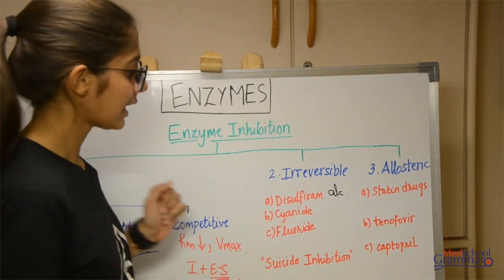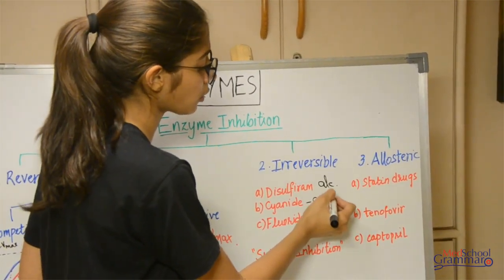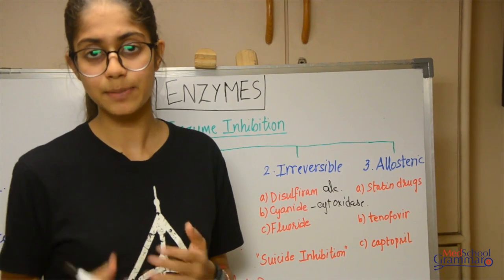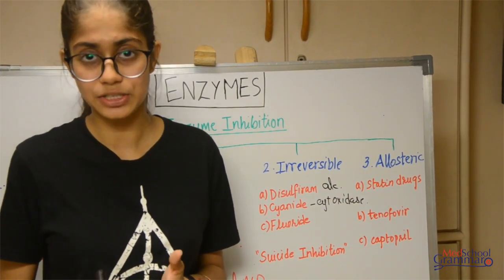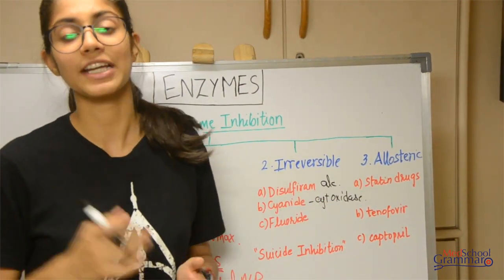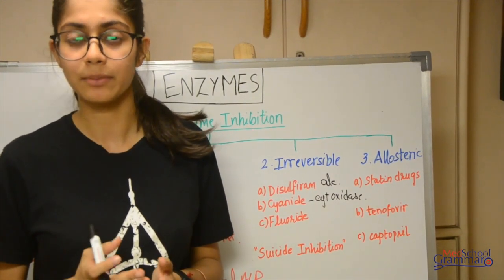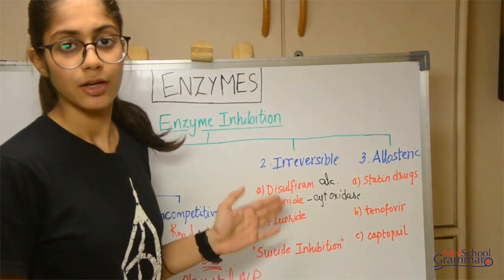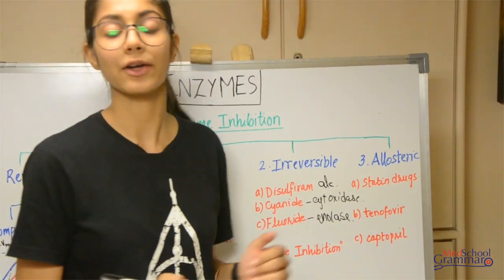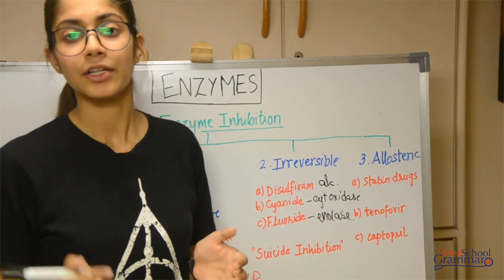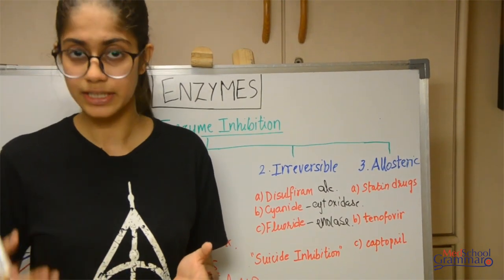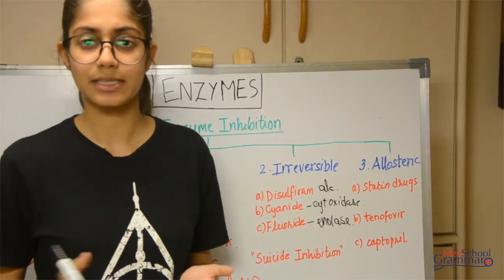Then you have cyanide. Cyanide inhibits the enzyme cytochrome oxidase, which is highly important in the respiration process — in biological oxidation. It inhibits cytochrome oxidase, because of which ATP is not formed and it can cause death within minutes. Then we have fluoride. Fluoride inhibits enolase, which is an enzyme in the glycolytic pathway. If this is inhibited, glycolysis is inhibited, and that means carbohydrate oxidation is inhibited and ATP formation is hampered.